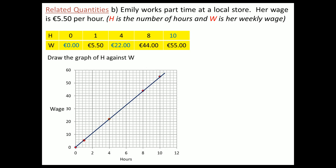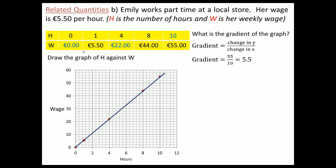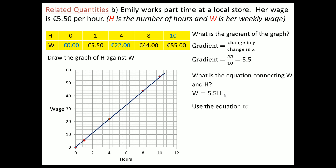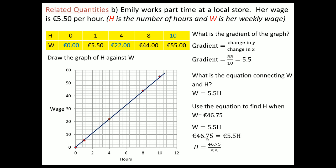If she works four hours it's four times £5.50 which is £22.00. We could work out the number of hours by dividing by £5.50. If we draw that graph we'd find a straight line again, and the gradient would be 5.5 — the rate per hour. The equation is w = 5.5h. We can say this is directly proportional because we have a straight line relationship that goes through the origin.